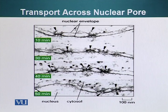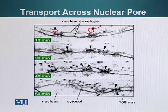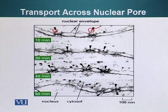Here is an experiment I would like to talk about. You can see these black dots — these are gold particles. After these gold particles are injected into the cell, photographs were taken using an electron microscope. What is special about these gold particles is that they have been attached to NLS — nuclear localization sequence — which allows them to enter the nucleus. After 10 minutes, the gold particles are assembling near the nuclear pore, which I have just circled.